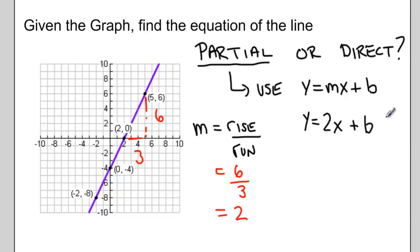b represents the starting value, or as we saw in class, the point where the graph crosses over the y axis. So here that starting value is negative 4. So my equation would be y equals 2x take away 4.